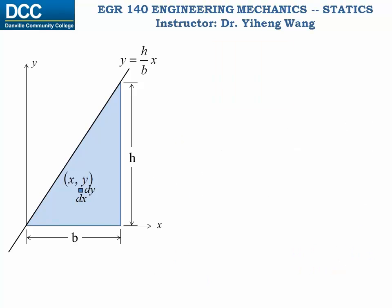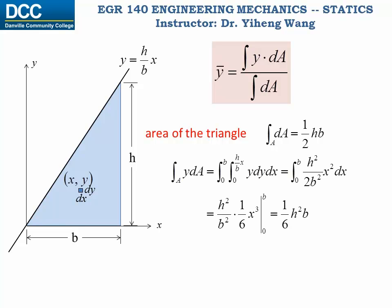Then we do the same thing for y bar. The denominator is of course still the total area, one half h times b. But we need to integrate y dA, and eventually we get y bar equals one third h.